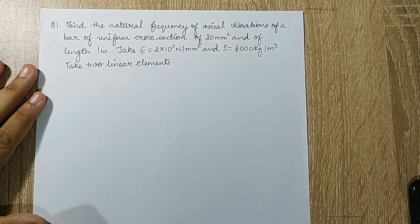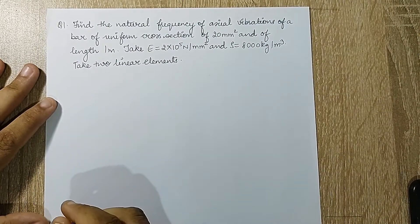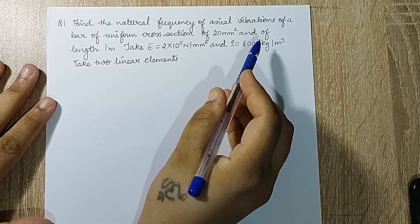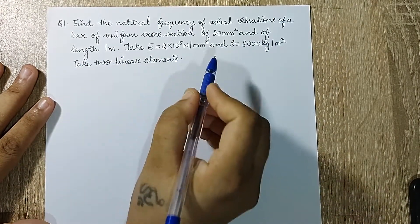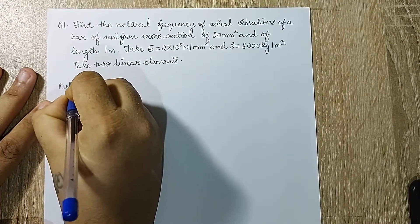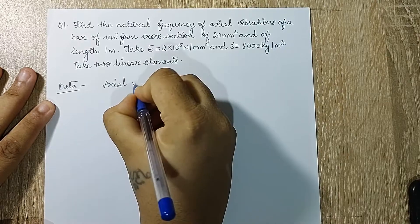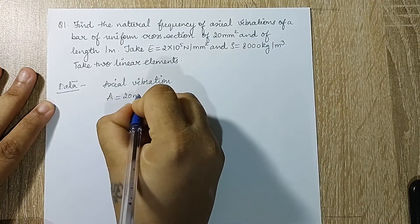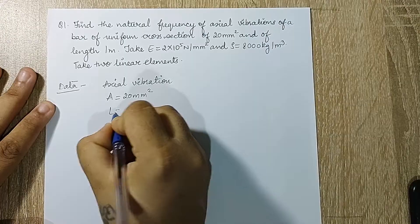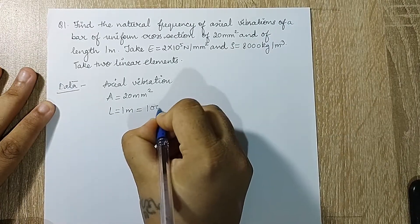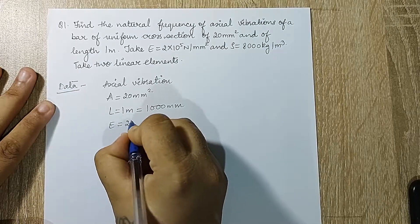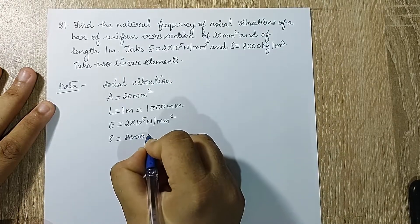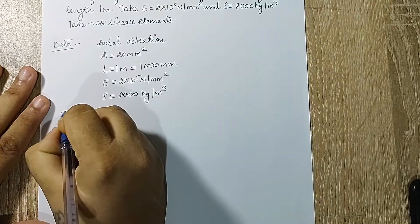Welcome to the next session of finite element analysis. In this session we are starting with numericals on transient dynamic problems. Find the natural frequency of axial vibration of a bar of uniform cross-section. Given data: area = 20 mm square, length L = 1 meter (= 1000 mm), E = 2×10⁵ N/mm², and ρ = 8000 kg/m³.